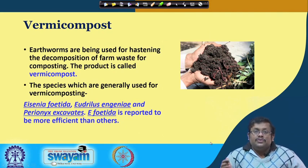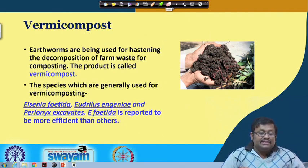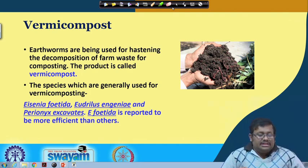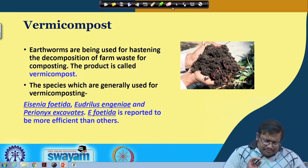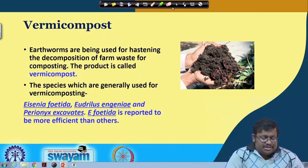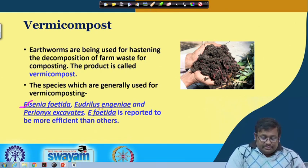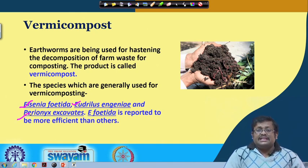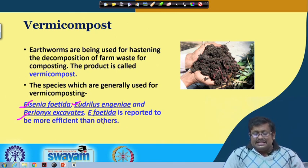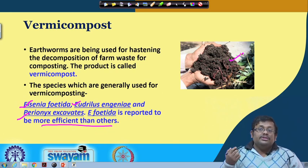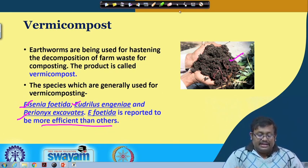Earthworms are used for hastening the decomposition of farm produce and waste for composting, and the product is called vermicompost. The species generally used for vermicompost are Eisenia foetida, Eudrilus eugeniae, and Perionyx excavatus, with Eisenia foetida reported to be the most efficient.